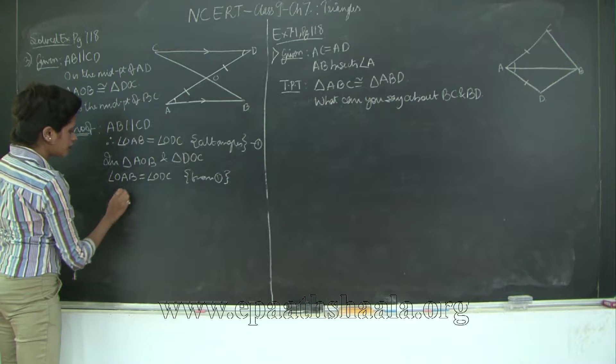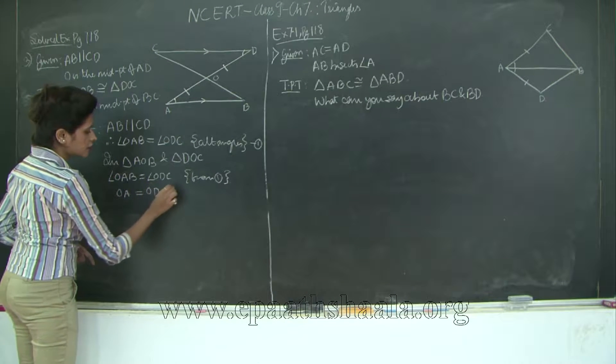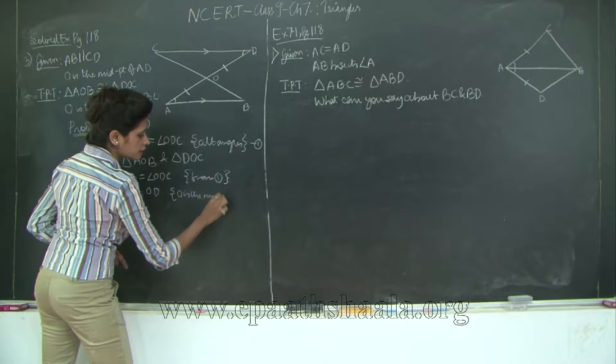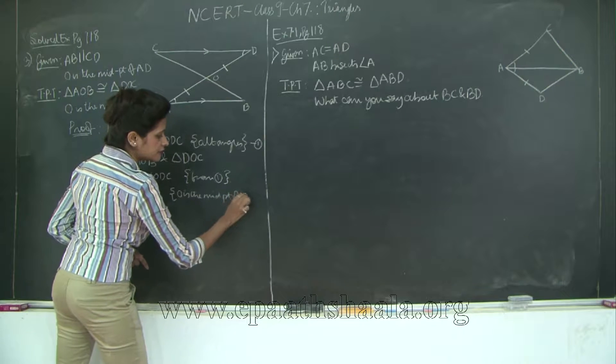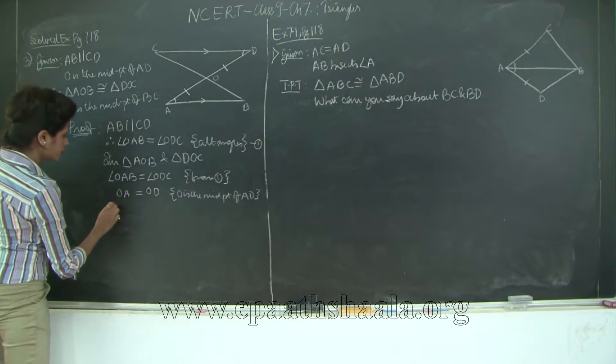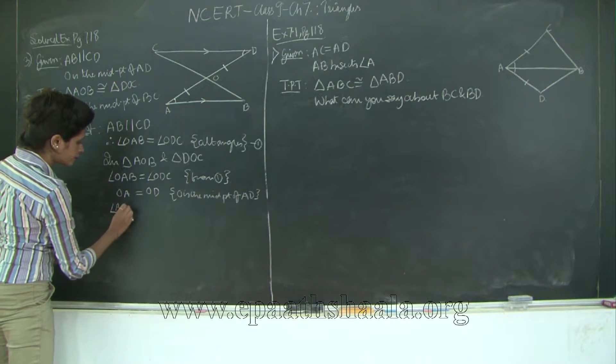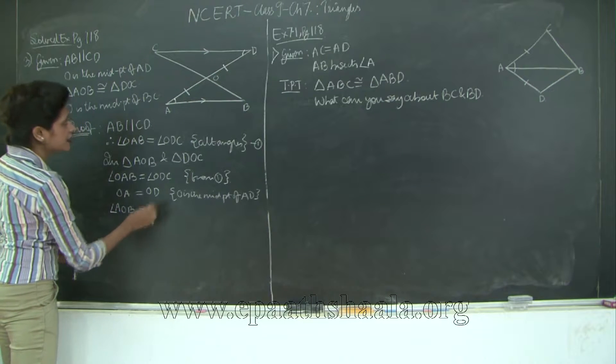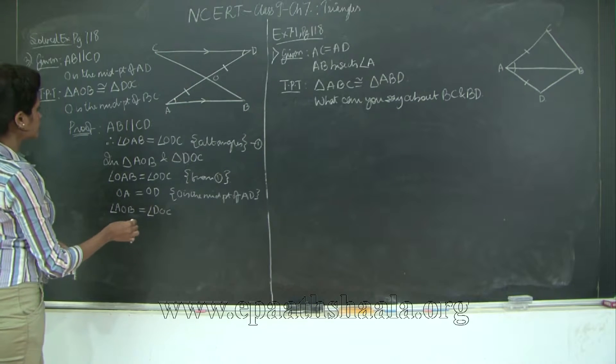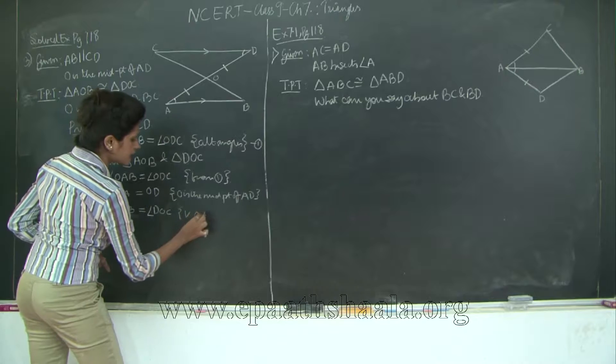Also I have OA is equal to OD. Why? Because O is the midpoint of AD. And also vertically opposite angles over here which would be AOB.